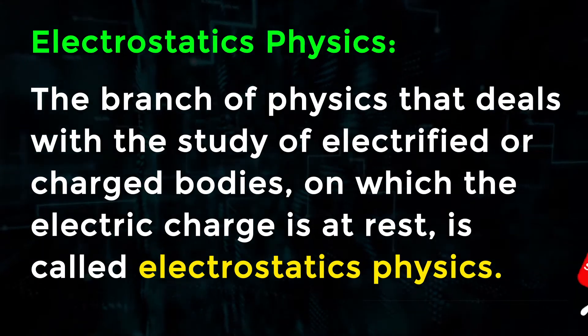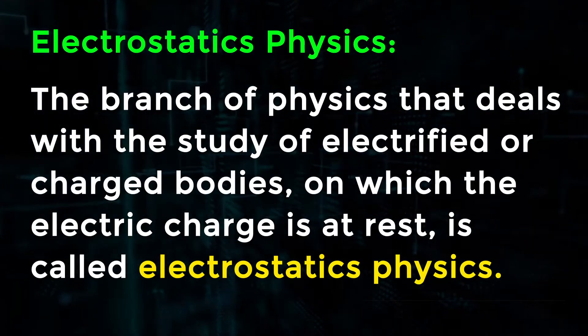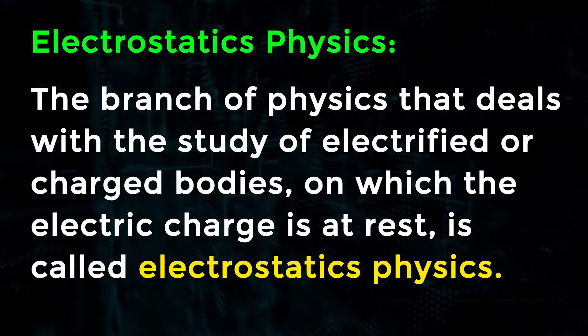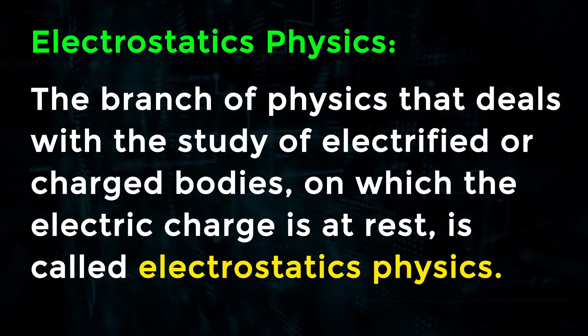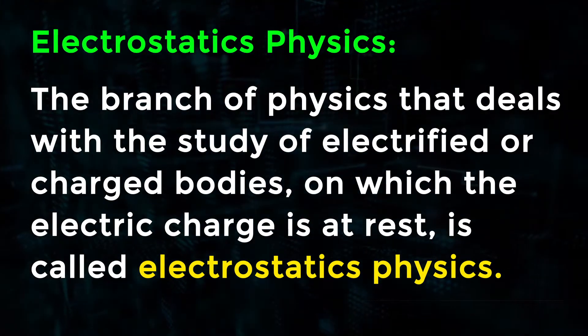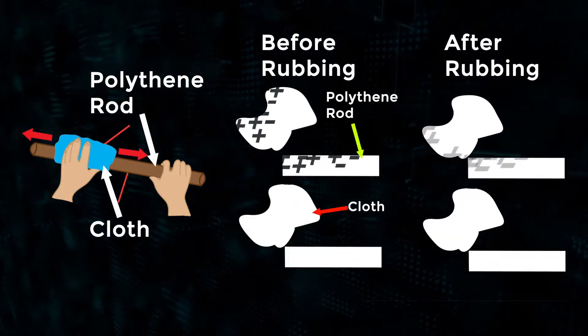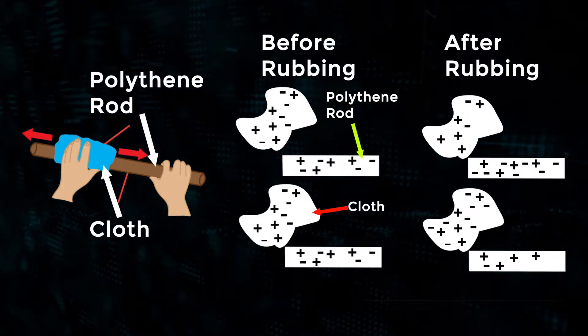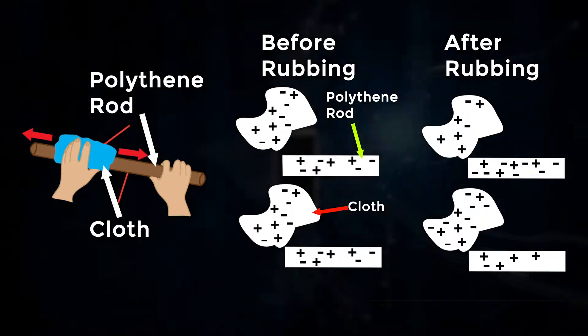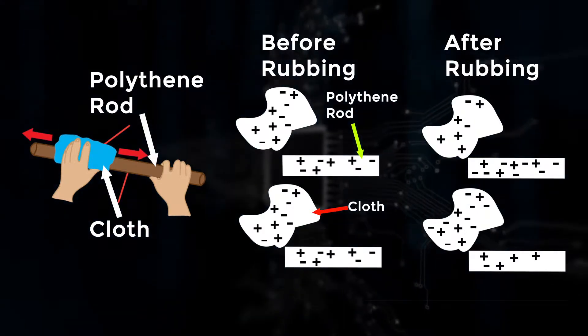The branch of physics that deals with the study of electrified or charged bodies, on which the electric charge is at rest, is called electrostatics physics. When a strip of polythene rod is rubbed with cloth, it becomes negatively charged. When a strip of cellulose acetate is rubbed with a cloth, it becomes positively charged.